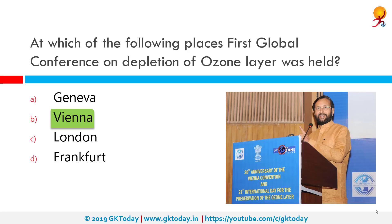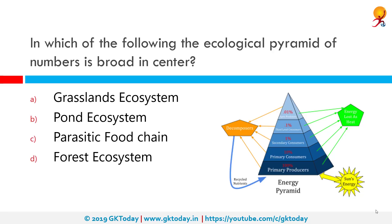In which of the following is the ecological pyramid of numbers broad in the center? It is broad in a forest ecosystem. A pyramid of numbers shows the number of individual organisms at each trophic level in an ecosystem. If there are more decomposers than producers, it would be an inverted pyramid. If there are more primary producers, it is an upright pyramid. In the case of a forest, it is a spindle-shaped pyramid, where the center is wider than both the top and the bottom.